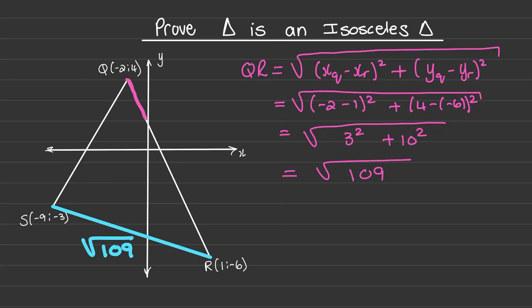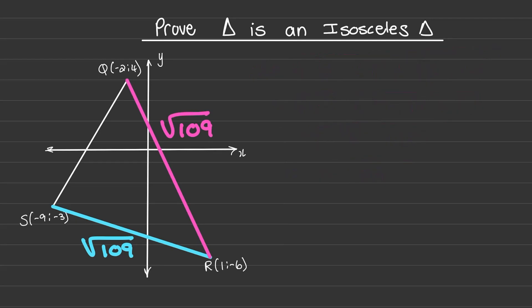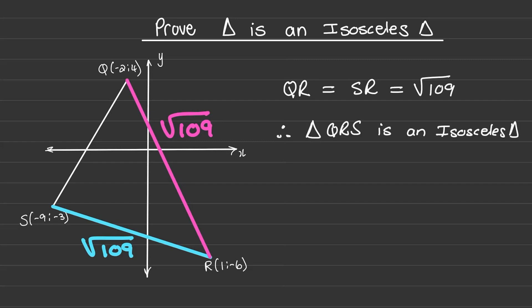So the length of line QR is equal to √109. We can now make the conclusion that line QR is equal to line SR, and they both equal the square root of 109.